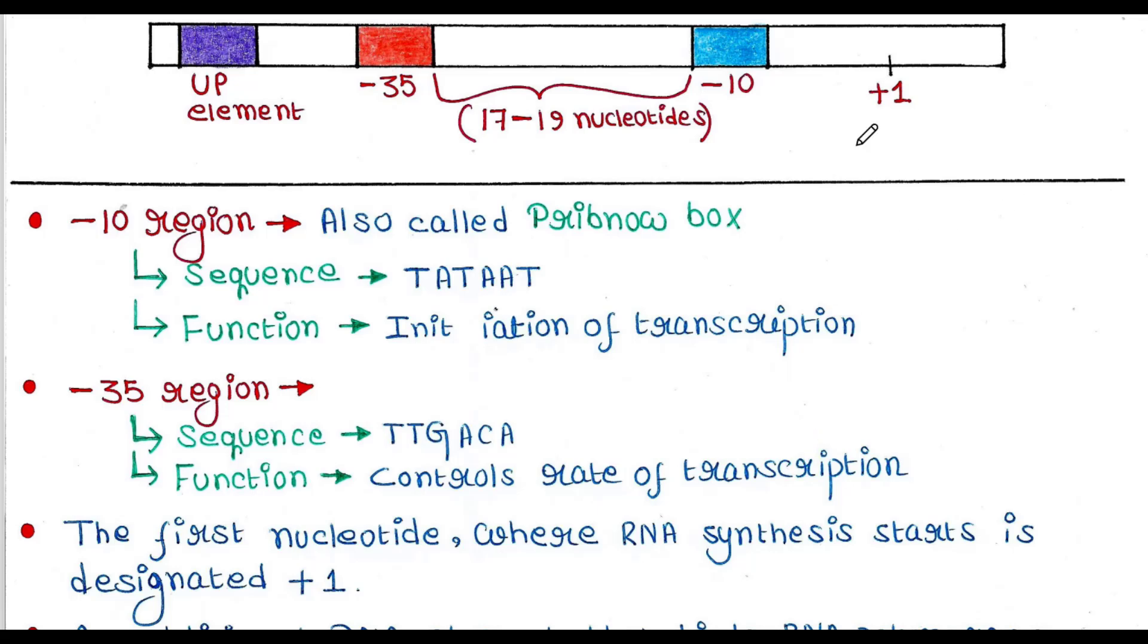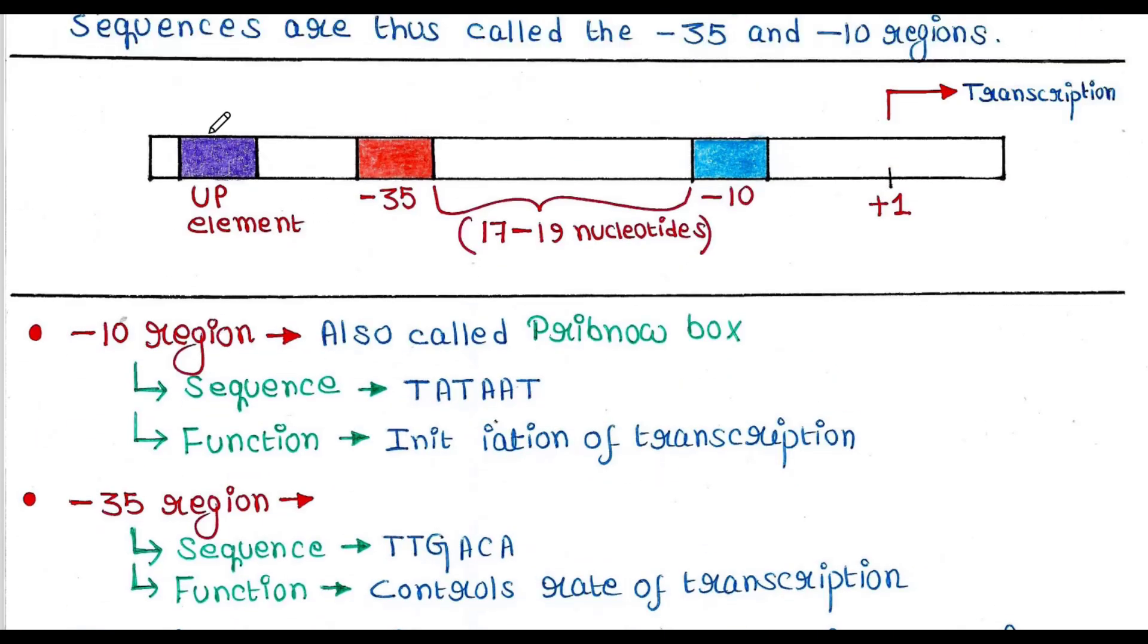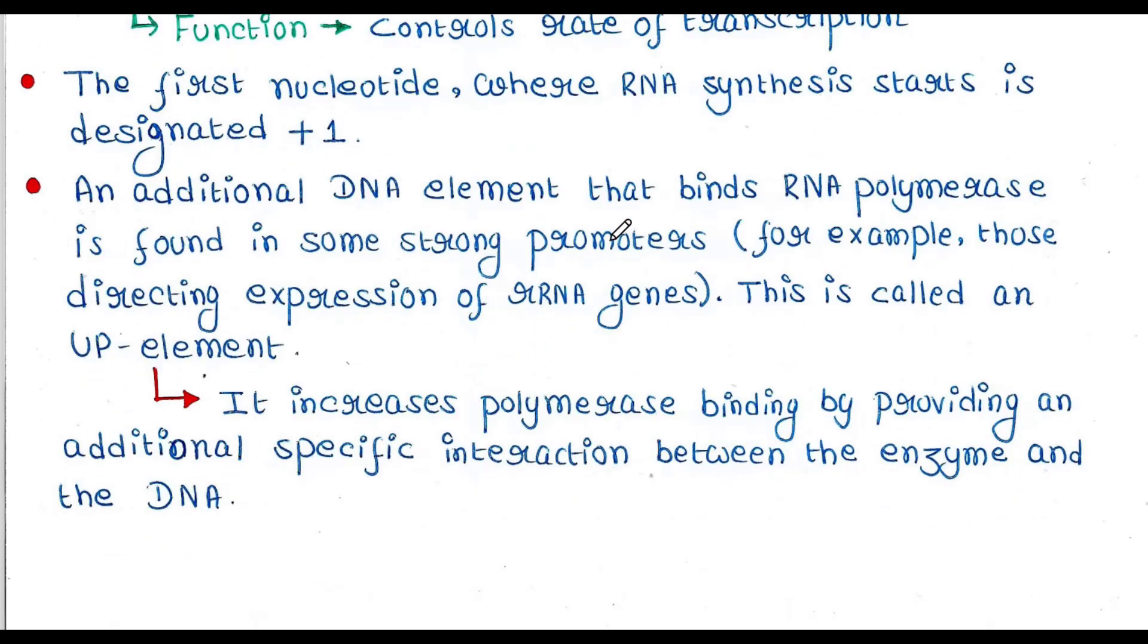The first nucleotide where RNA synthesis starts is designated plus 1. An additional DNA element that binds RNA polymerase is found in some strong promoters. This is the UP element.